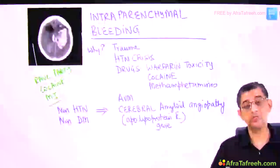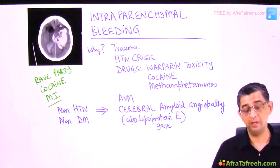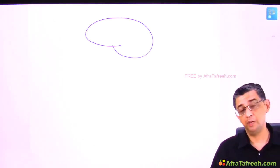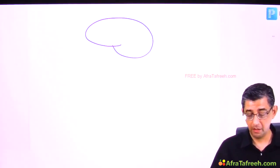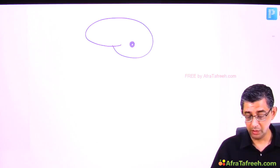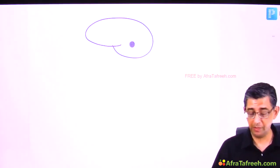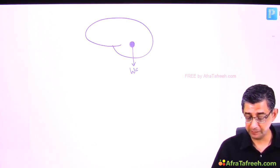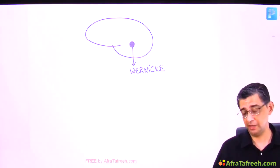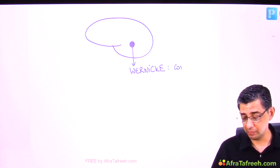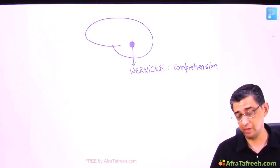Now I'll describe a case of a 50-year-old banker taking a sales meeting. We focus on the left side of his brain. The left side contains Wernicke's area, responsible for comprehension — any injury here means the person cannot understand commands.